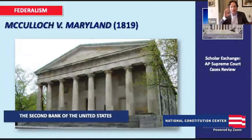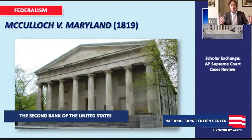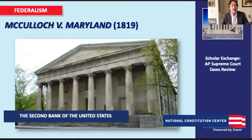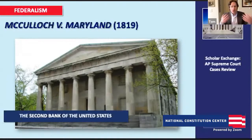Maryland passed this law taxing the bank out of existence. The law was challenged, and Maryland made one big constitutional argument: that the bank chartered by Congress was unconstitutional. They said, look at the Constitution — where does it say Congress has the power to charter banks? It's not anywhere in there. Congress doesn't have the power, so the national bank is unconstitutional. But with Chief Justice John Marshall writing for the Supreme Court, it said Maryland, you are wrong — for two reasons.